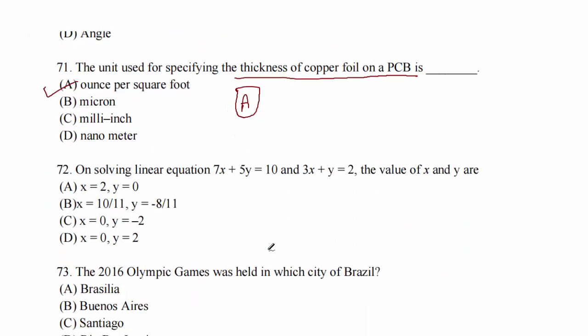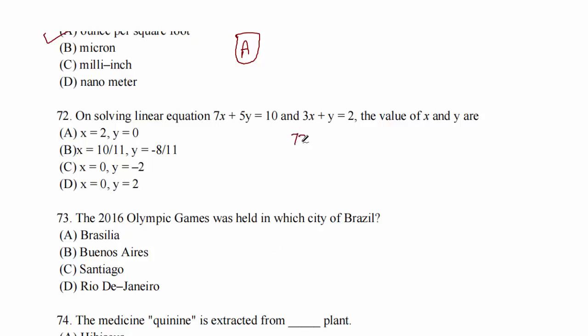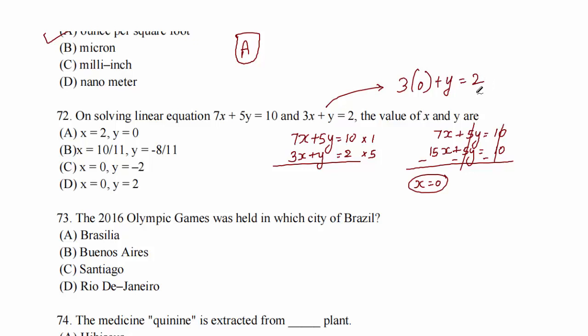Question 72 is based on linear equations: 7x + 5y = 10 and 3x + y = 2. Multiplying the first equation by 1 and the second by 5, we get 7x + 5y = 10 and 15x + 5y = 10. Subtracting, we get x = 0. Substituting x = 0 into 3(0) + y = 2, we get y = 2. So x = 0, y = 2. Option D.